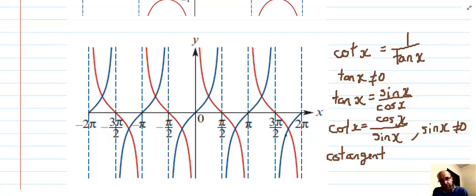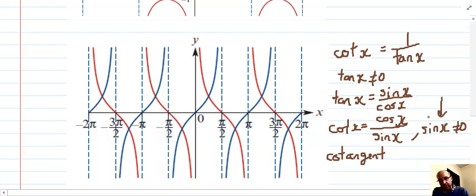Now when is it discontinuous? You can see some asymptotes there. When is sin x equal to 0 is the main question you need to ask, because that will make tan equal to 0 and then we have an undefined situation.